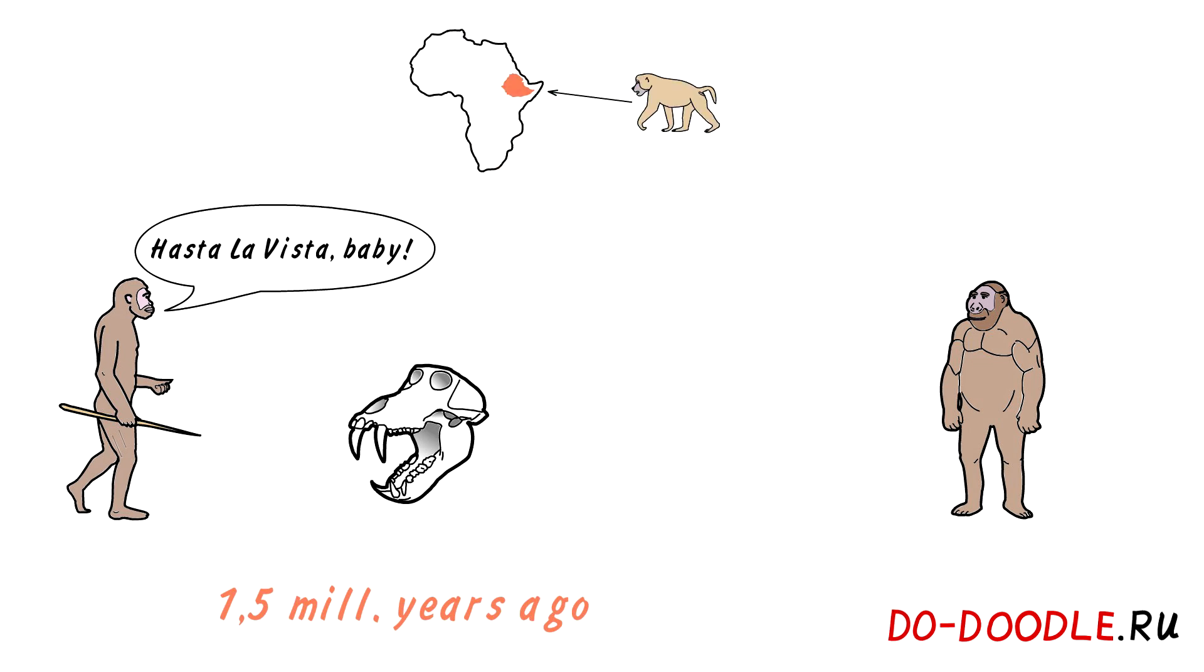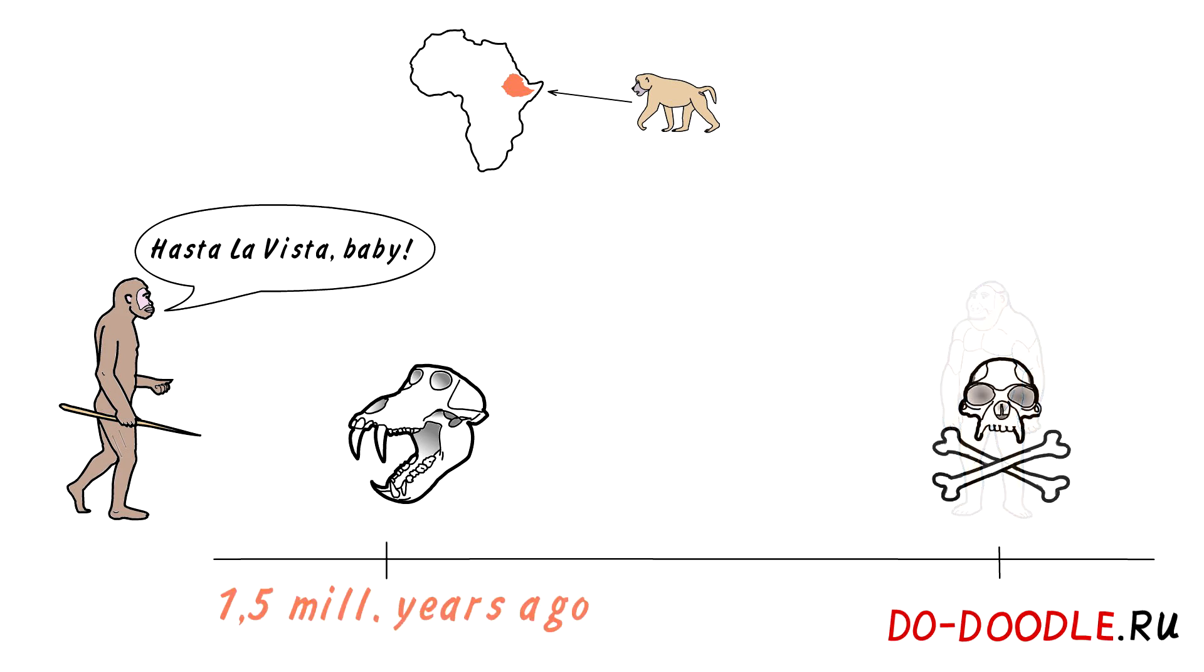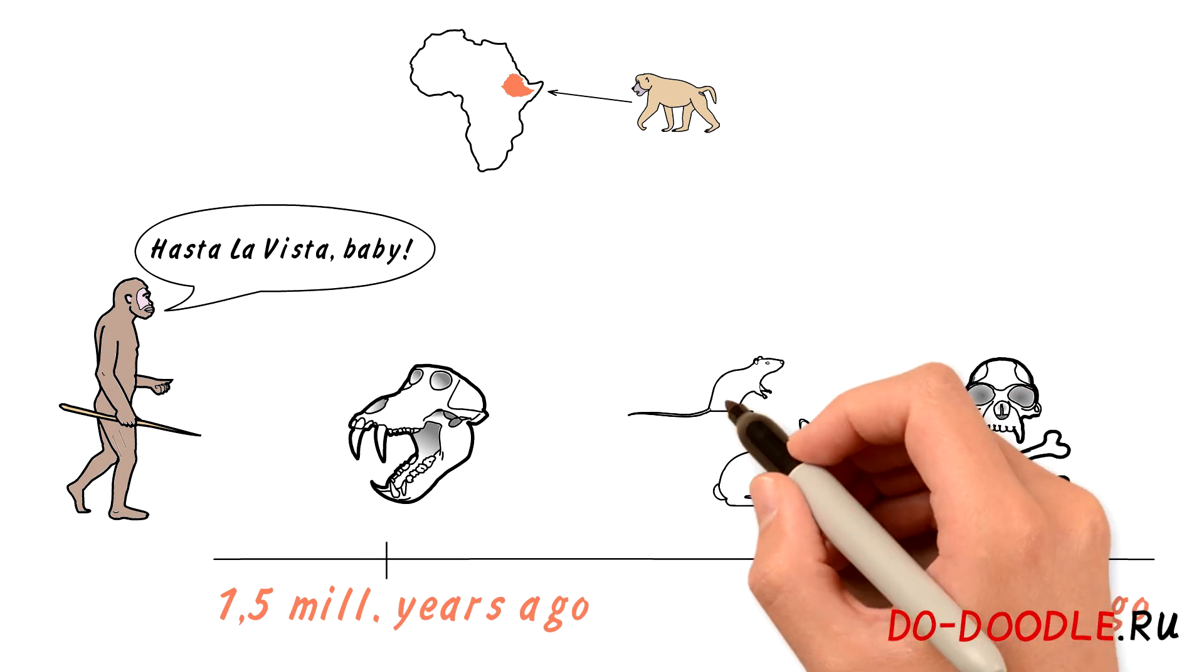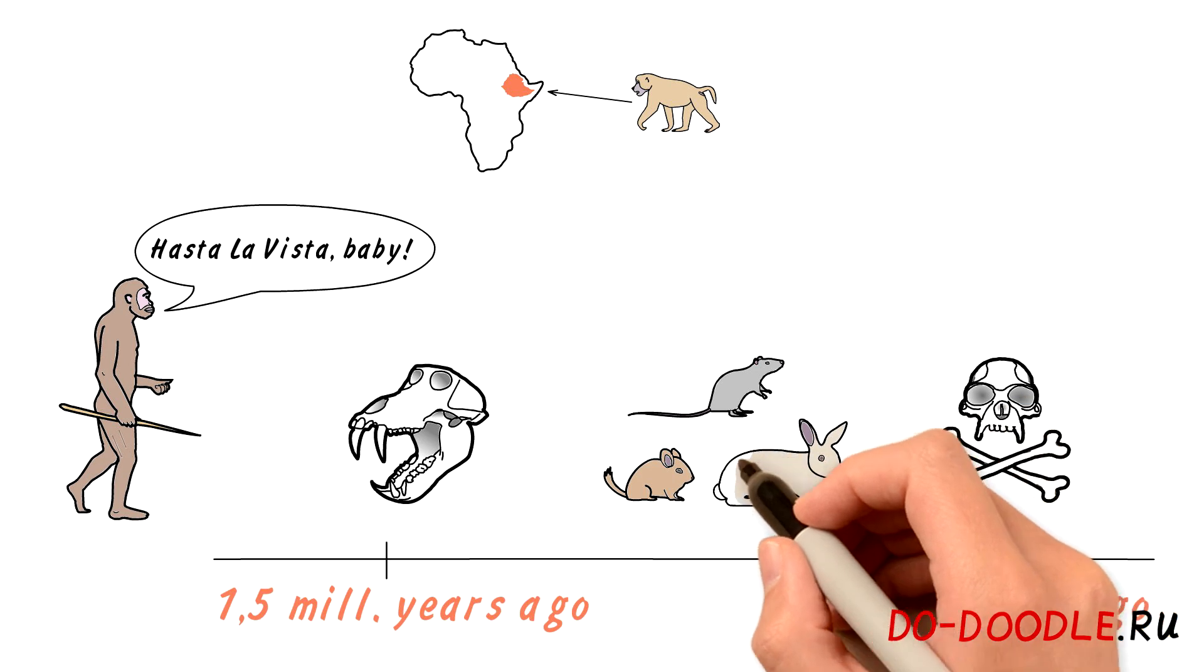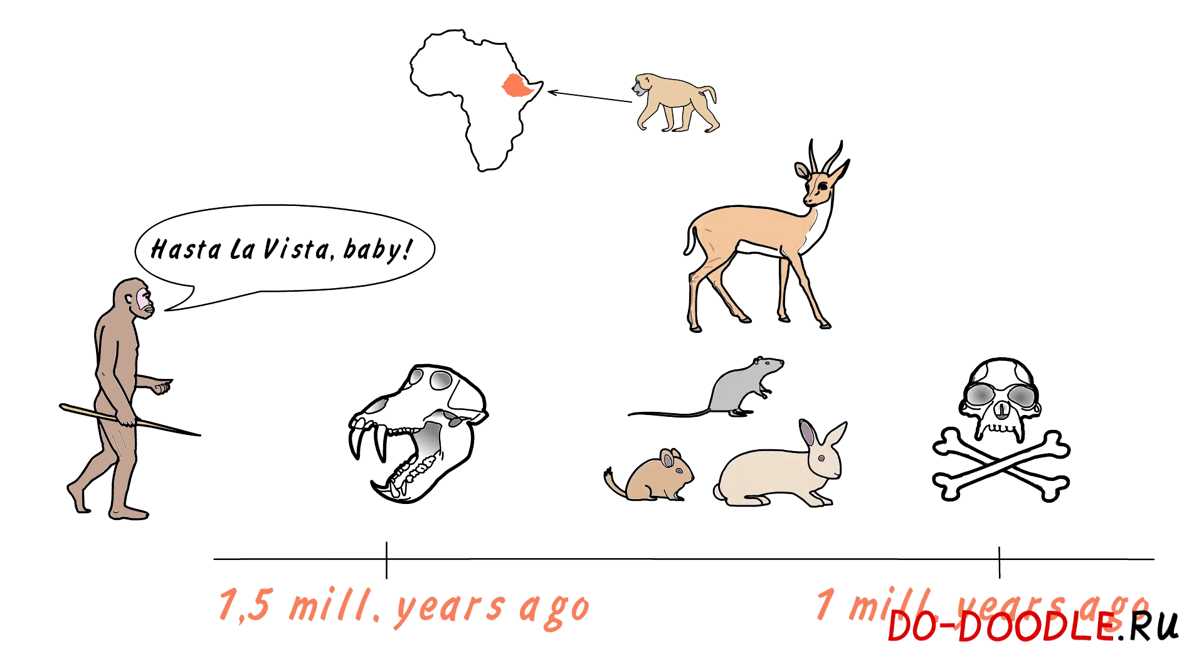Our vegetarian cousins, paranthropus, managed to last much longer, but still disappeared around one million years ago. They were unable to withstand the competition against small rodents and new types of hoofed animals.